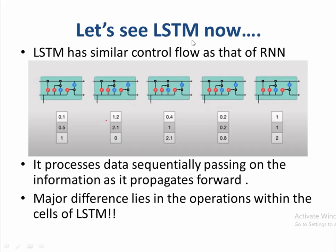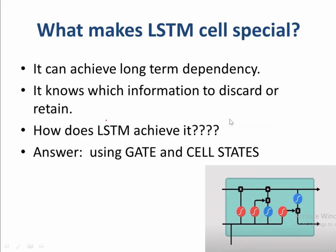LSTM has a similar control flow as that of an RNN, but the major differences lie in the operations present inside the LSTM cell. The cell has a completely different operation than an RNN cell. What makes the LSTM cell special is that apart from activation functions, it uses a lot of gates and cell states — it knows which information to retain, which to discard, and thus can achieve long-term dependencies.